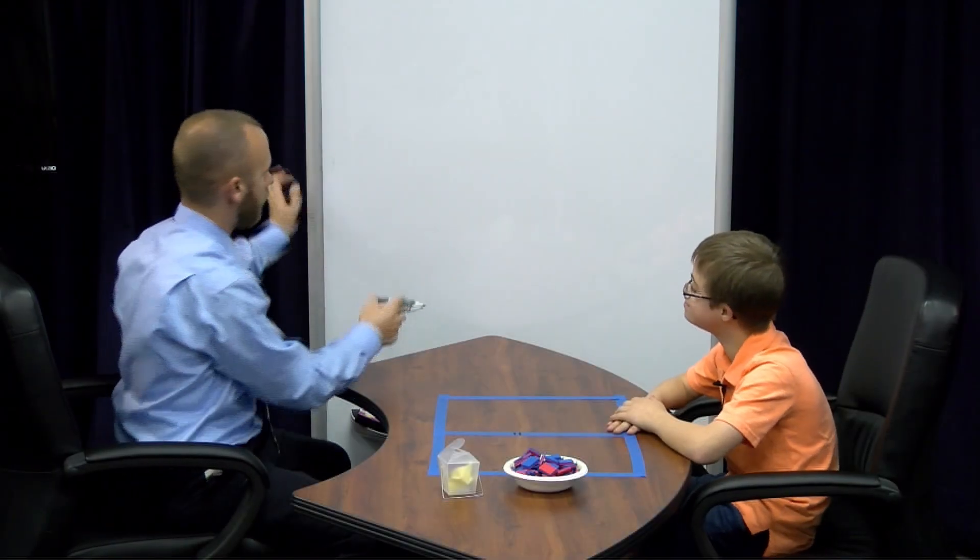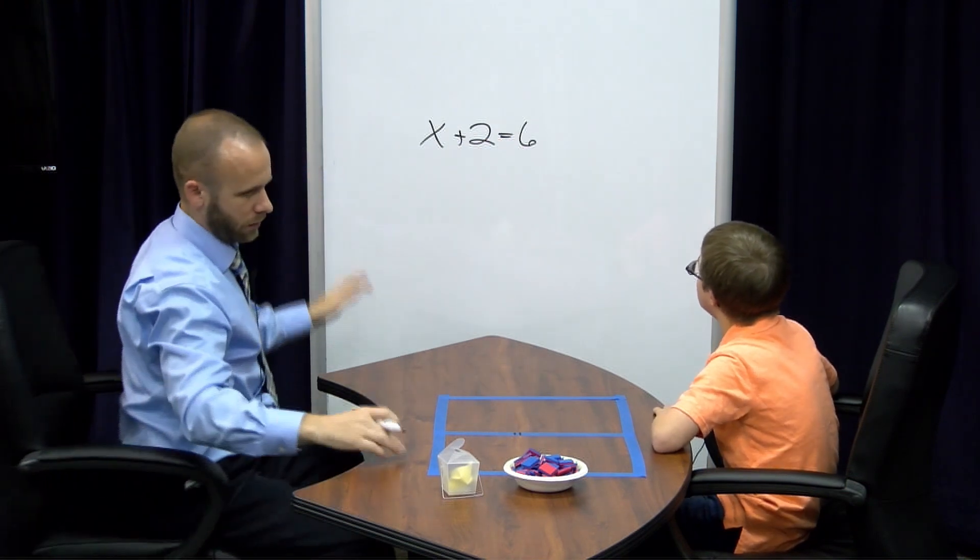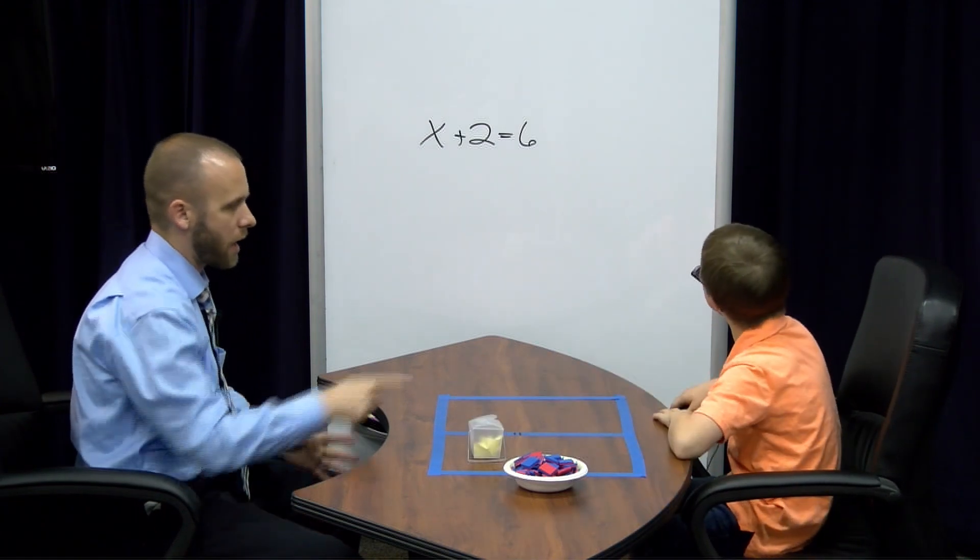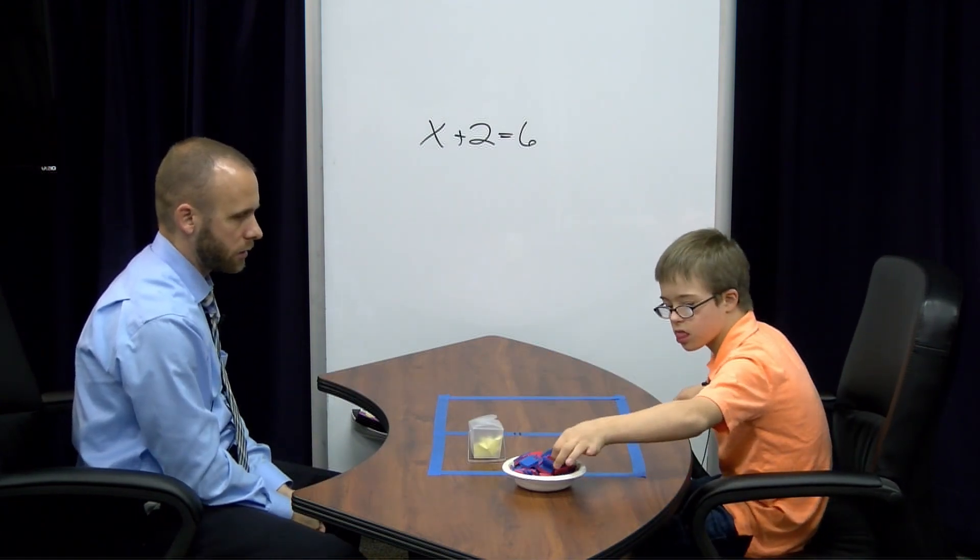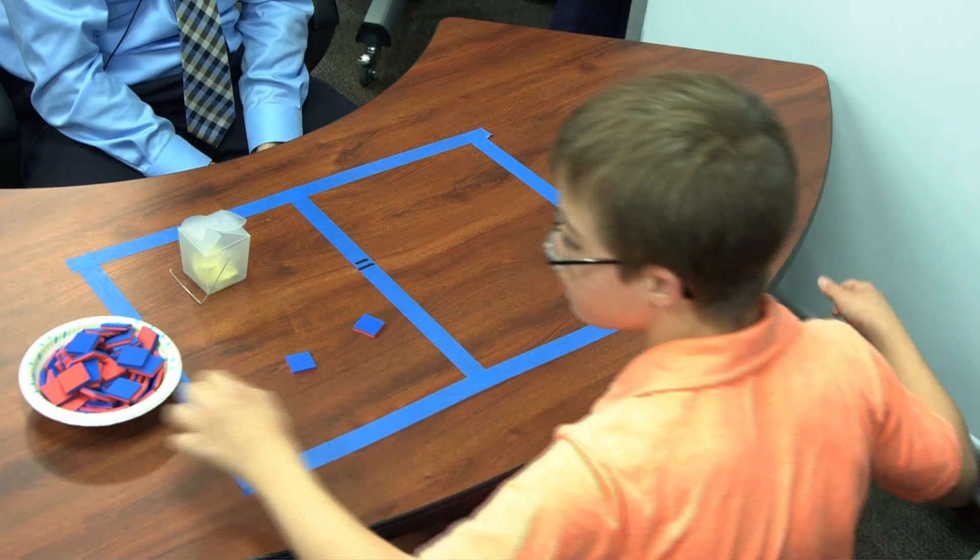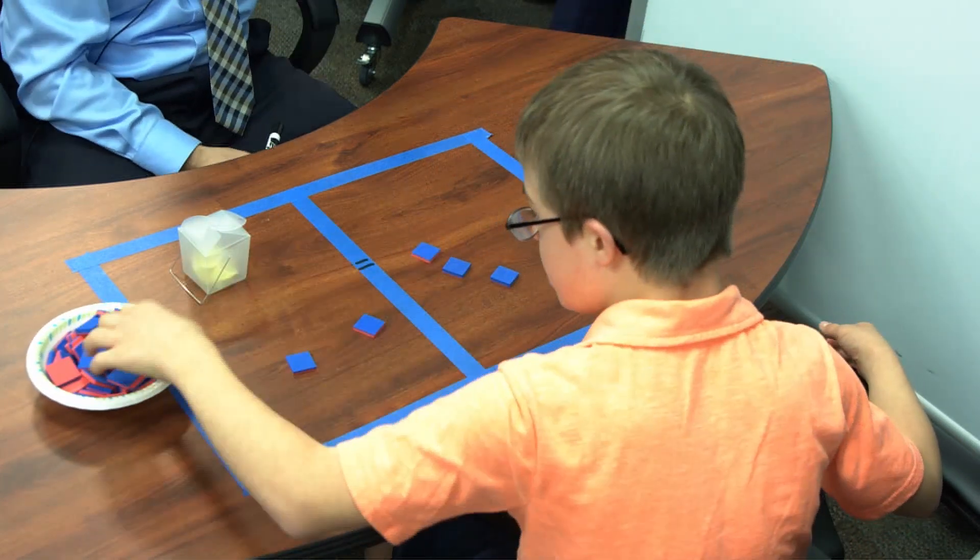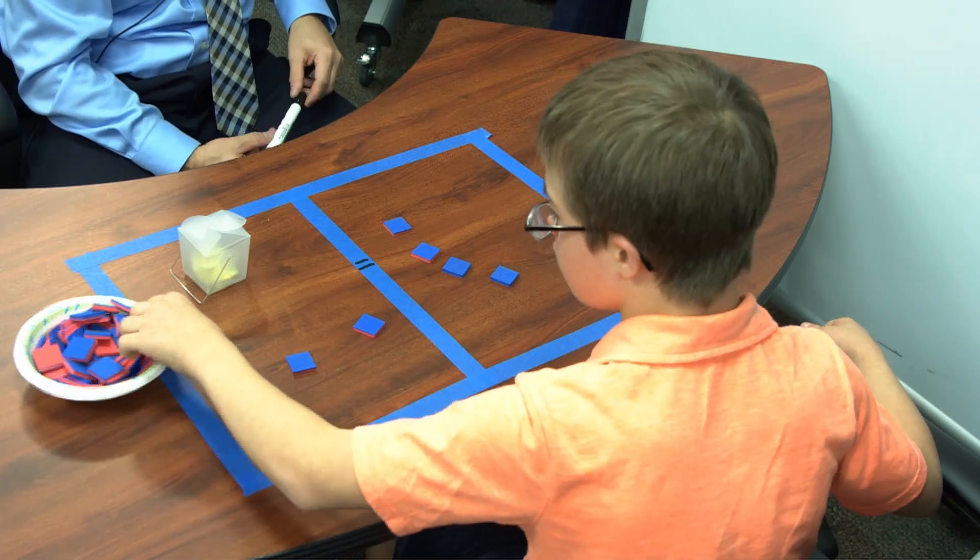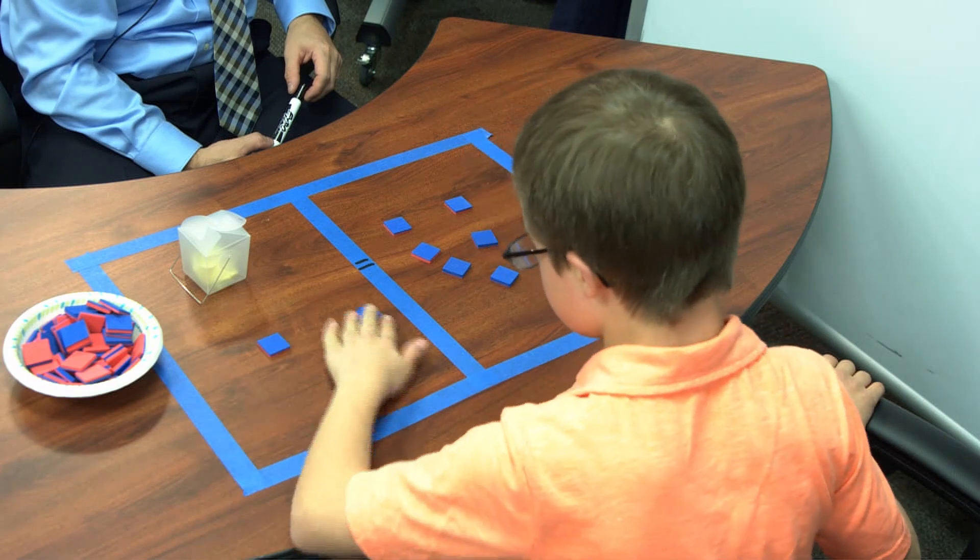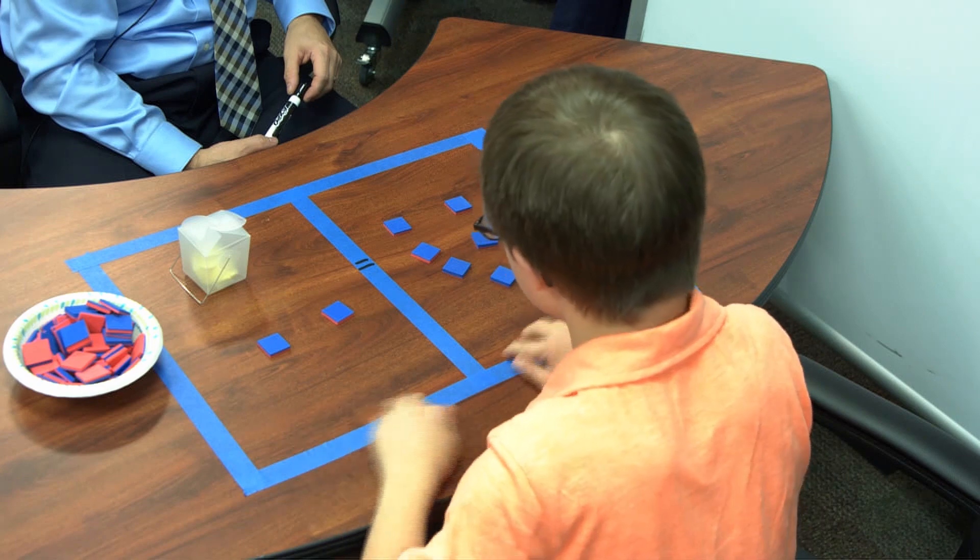You ready? We're going to do this problem. X plus 2 equals 6. Show me how to do it. What's that? X. Plus 2. There's probably a 6. One, two, three, four, five, six. Go ahead.